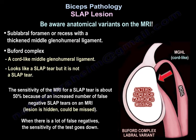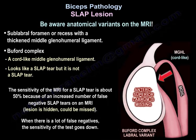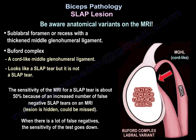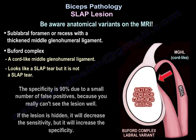The sensitivity of MRI for SLAP tear is about 50% because of an increased number of false negatives, as the lesion is hidden and could be missed. When there are many false negatives, the sensitivity of the test goes down. The specificity is 90% due to a small number of false positives. If the lesion is hidden, it will decrease sensitivity but increase specificity.